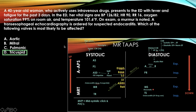The answer is tricuspid valve. The question involves an IV drug user — suspect endocarditis. Endocarditis in an IV drug user = tricuspid valve involvement = tricuspid stenosis.